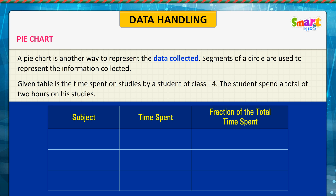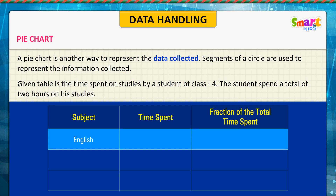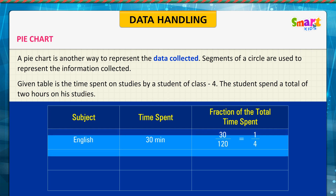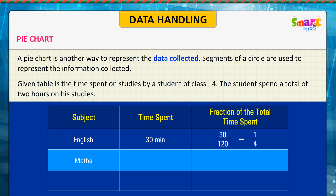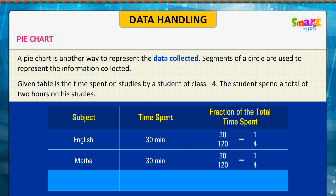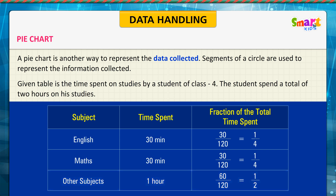The student spent a total of 2 hours on his studies. Time spent on English is equal to 30 minutes, or 1/4. Time spent on Maths is equal to 30 minutes, or 1/4. Time spent on other subjects is equal to 1 hour, or 1/2. We can show this in the diagram.